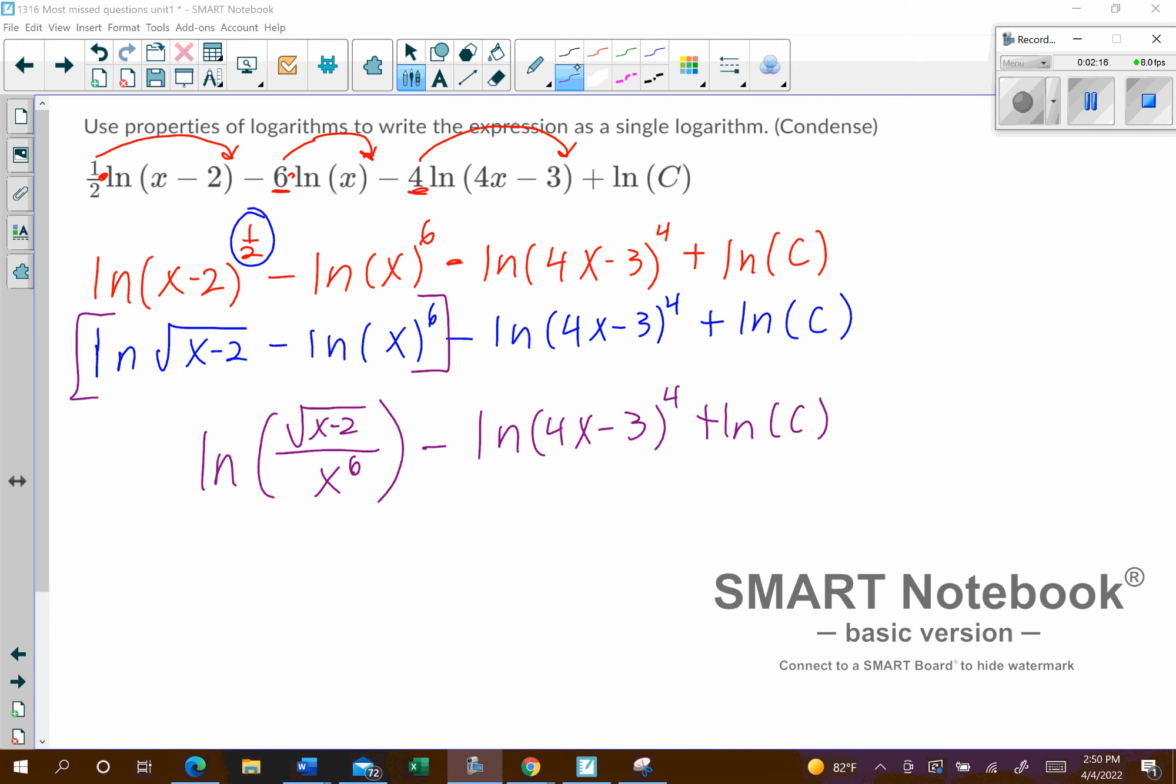All right, and so since I'm subtracting again, that part is going to go in the denominator spot right there next to the x to the power of 6. So this will become the natural log of the square root of x minus 2 all over x to the power of 6 times 4x minus 3. And then we still have plus the natural log of c.